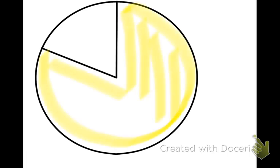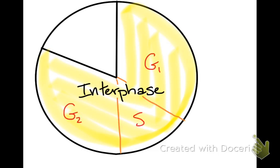A cell that will divide goes through three sub-stages of interphase, and those are G1, S, and G2. A cell that does not divide is said to be in G0. Once the cell moves out of G1